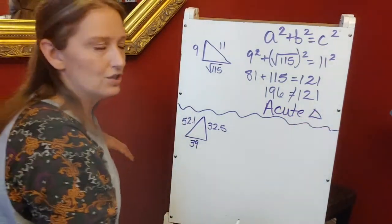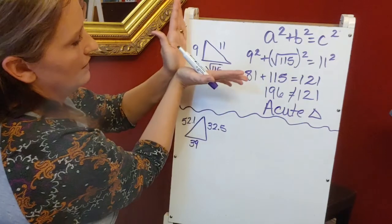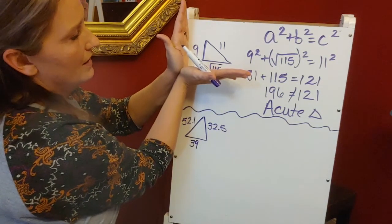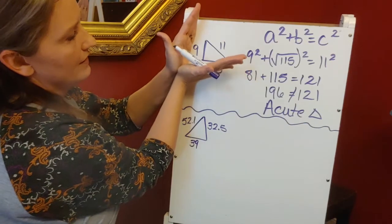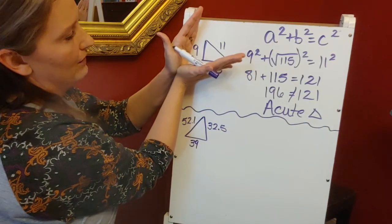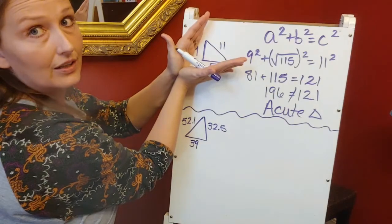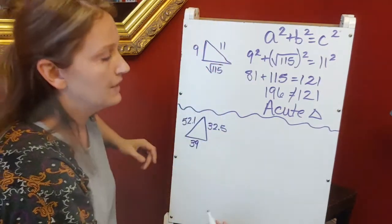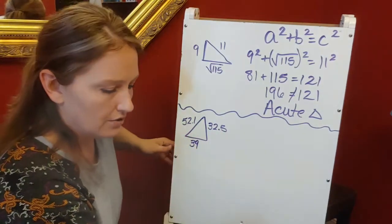That makes sense if you think about it. If this triangle were right, it would have a certain length hypotenuse. But if that length is shortened, it's going to make a smaller angle, which makes an acute triangle. Let's look at this other triangle.